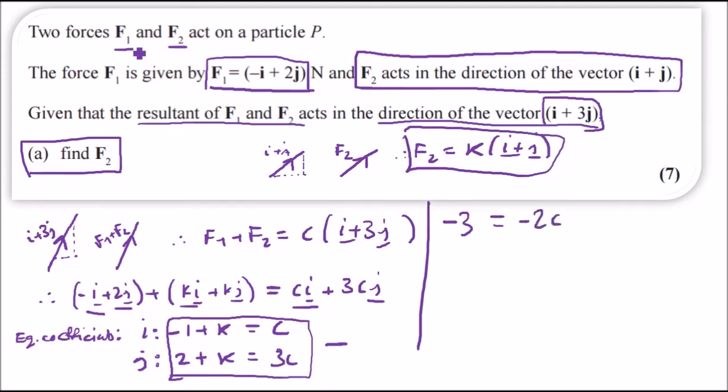And thus c equals divided by minus 2 will give us 1.5. And then picking one equation, I'll pick this one up here, the one of minus 1 plus k, so using minus 1 plus k equals c, replacing c here and adding 1, we're going to have k equals 1 plus c, i.e. 1 plus 1.5 will give us 2.5.